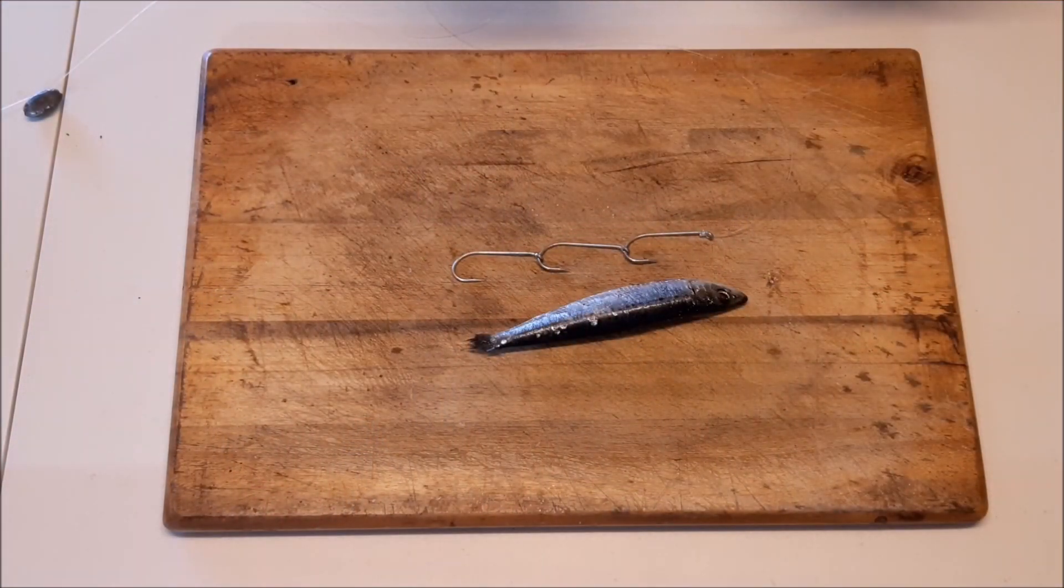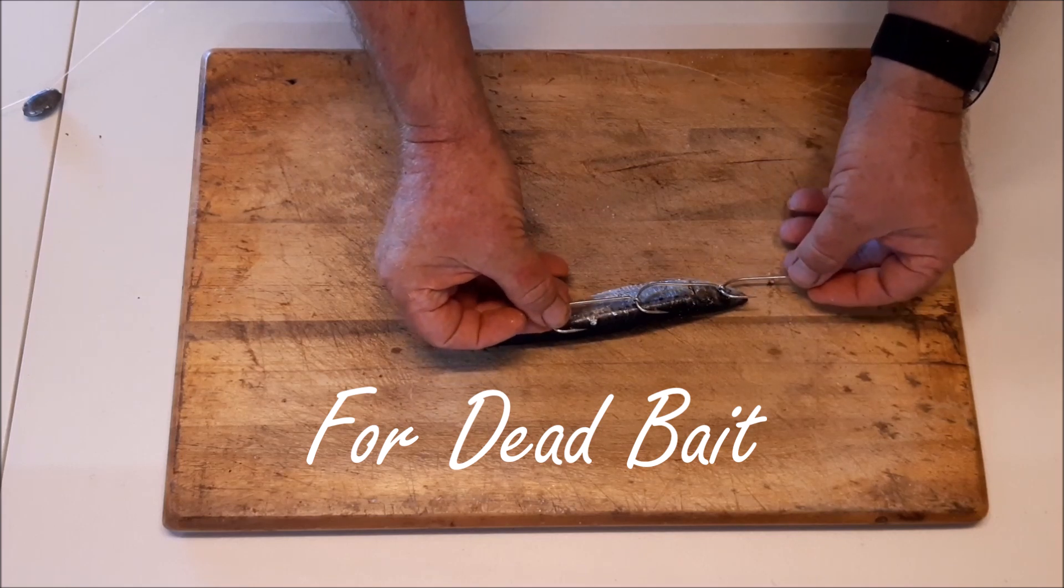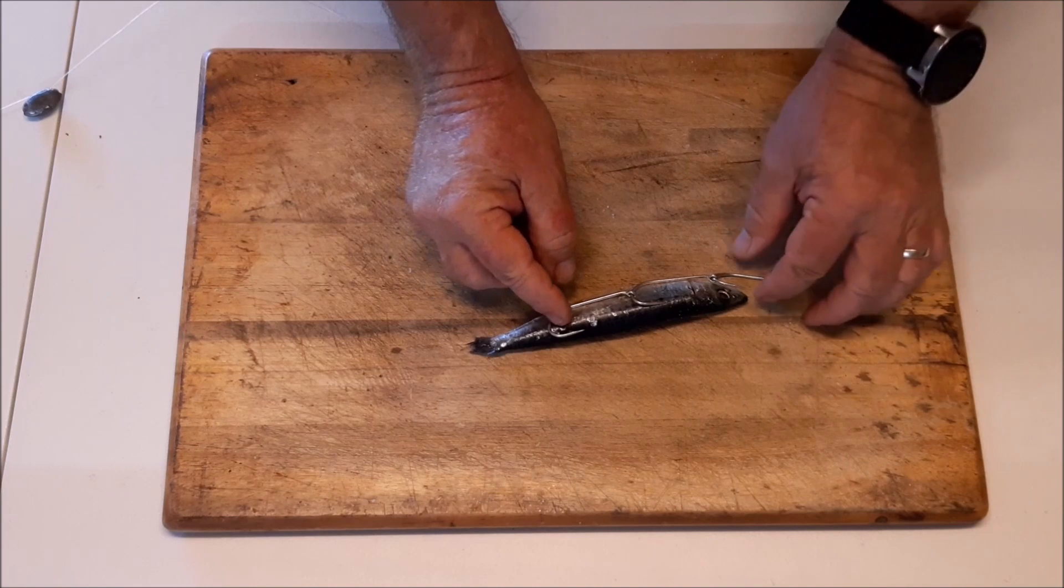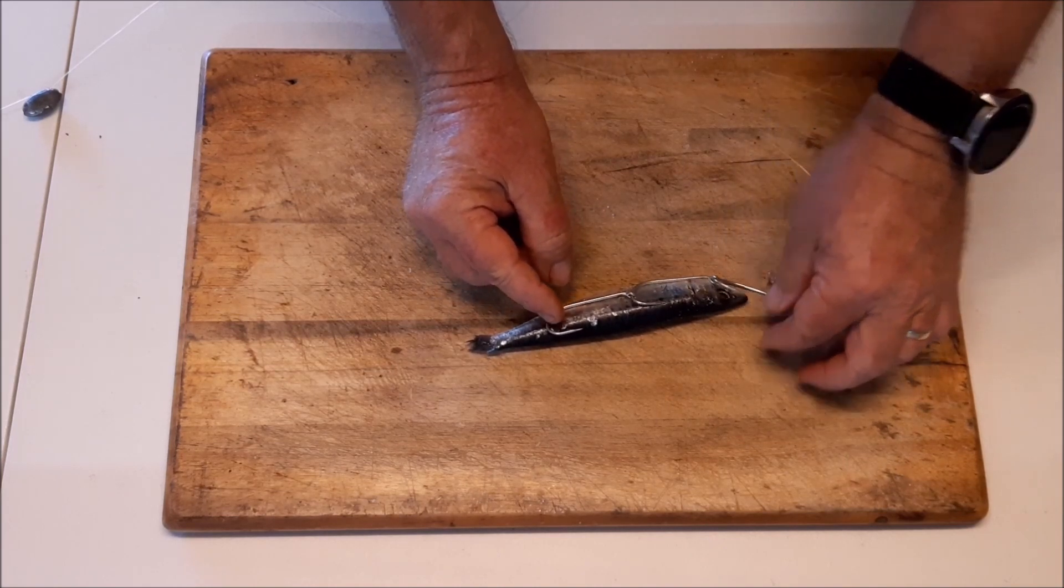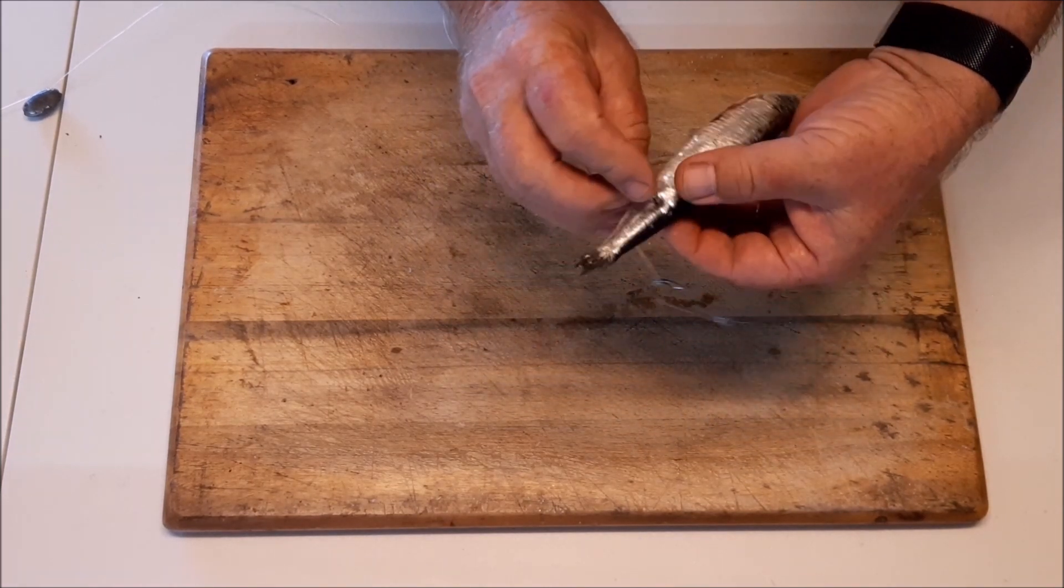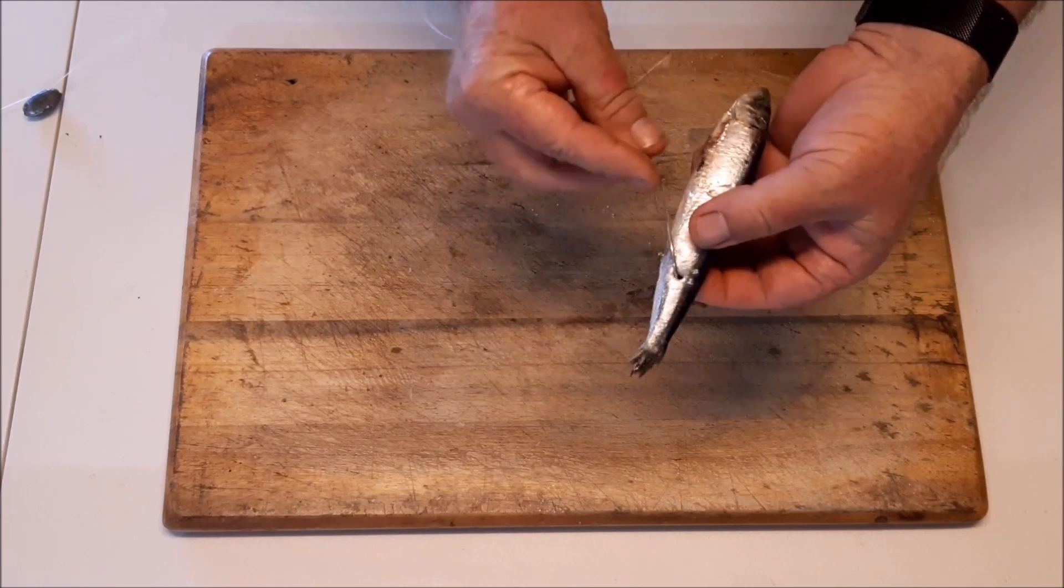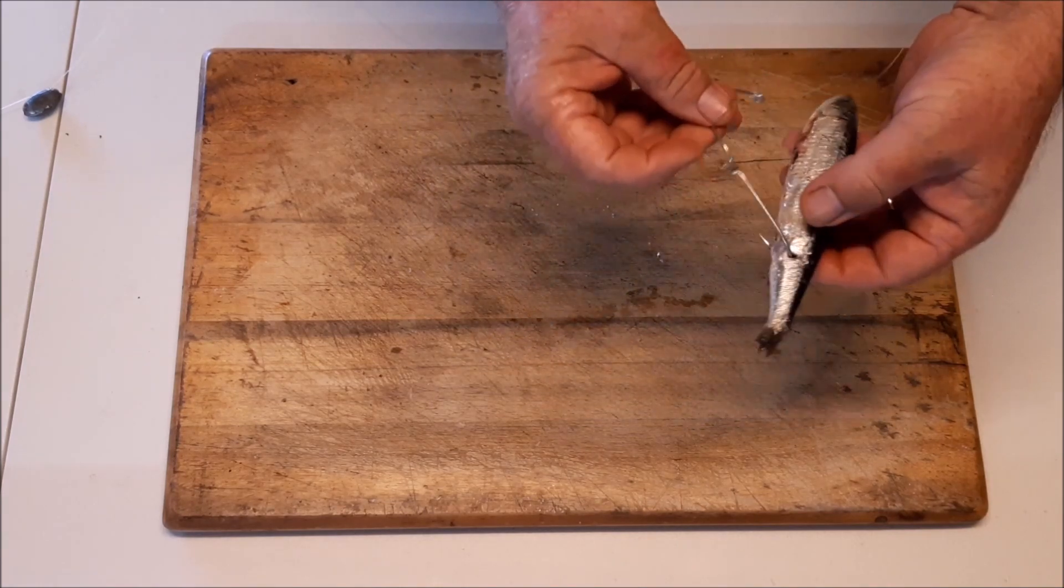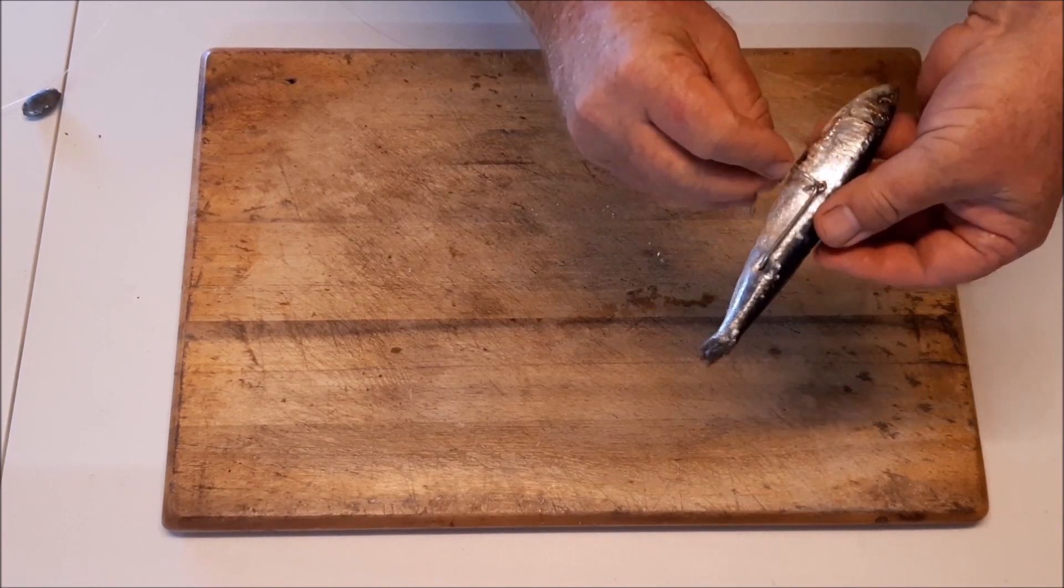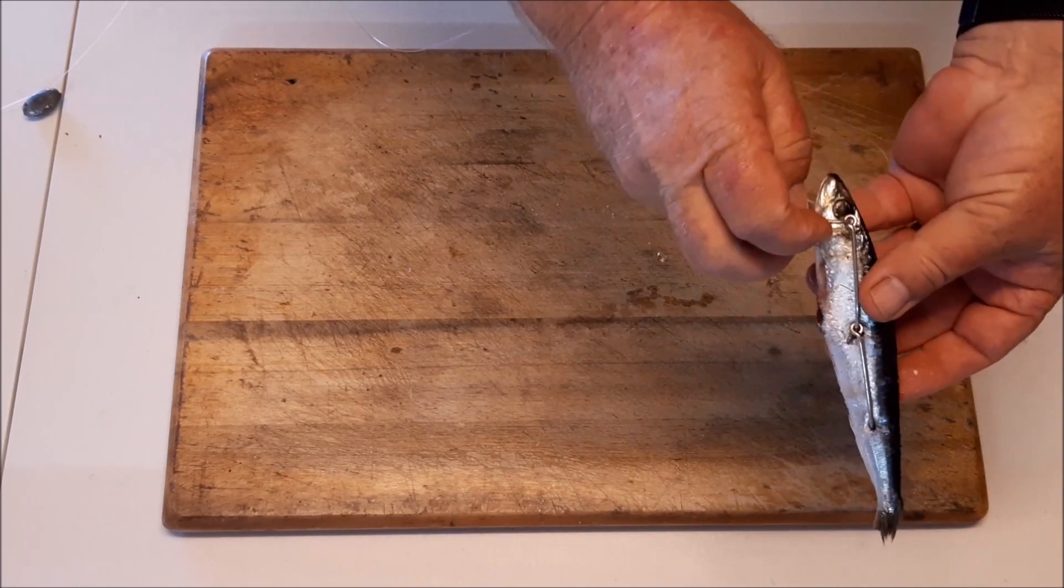When you're baiting up the triple hooks I've found the best way to do it is grab your hooks, place it next to your fish, mark the spot where you actually want to start the hook where that top one goes through the eye. First hook through, second hook through, and the third one should line up with the eye.